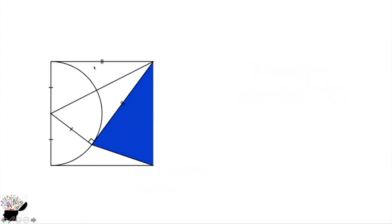We can see that this length here will be the same as this length. Because of this arc, this side is the same as this side. The side of the square is 10, and this is a semicircle, so this part will be 5.